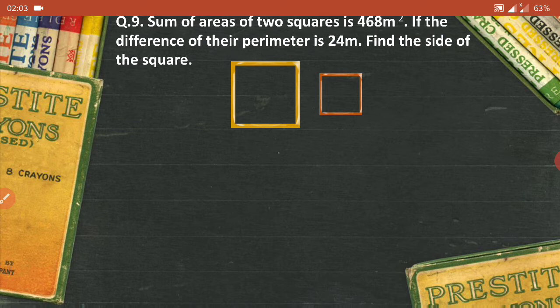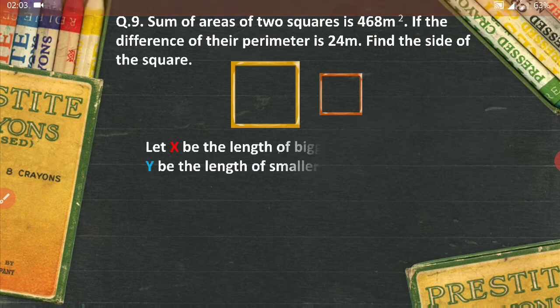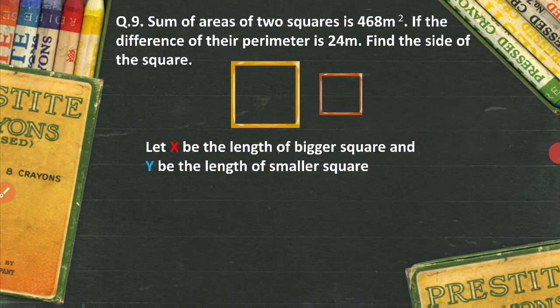Next, let x be the length of the bigger square and y be the length of the smaller square. Now you will wonder that if it is a quadratic equation, then we usually have just one variable, but in this case I am already considering x as one variable, y is another variable. Now would that be a problem?